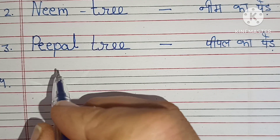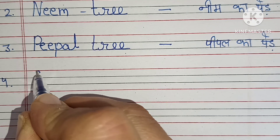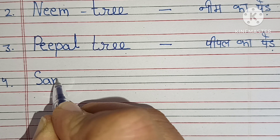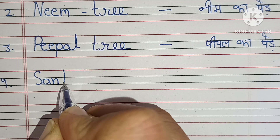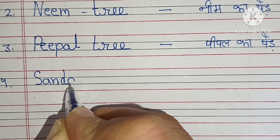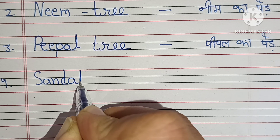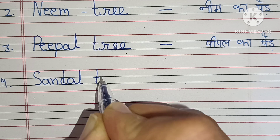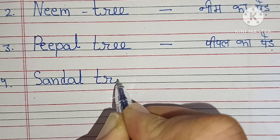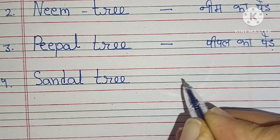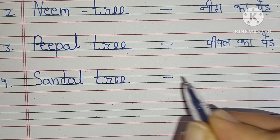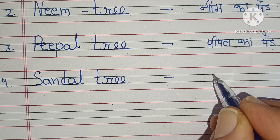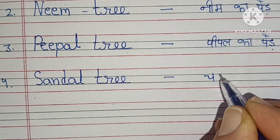Number 4: Sandal Tree. S-A-N-D-A-L, Sandal Tree. Sandal Tree means Chandan Ka Paid.